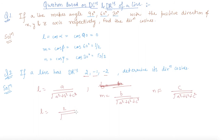So L is 2 over √(2² + (-1)² + 2²). This is 2 over √9, which is 2/3. M comes out to be -1/3 and N comes out to be 2/3. So these are the direction cosines of the line.